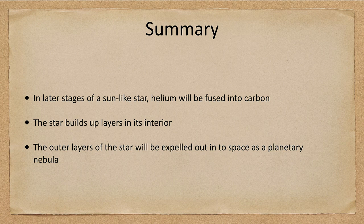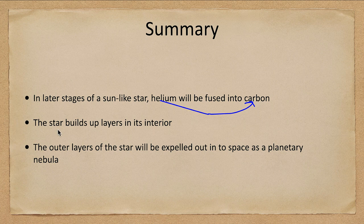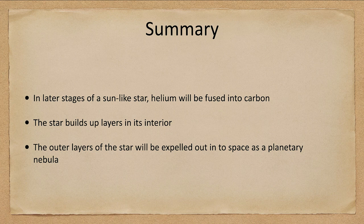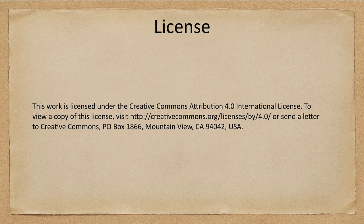To summarize: in the later stages of a sun-like star, helium is fused into carbon while on the main sequence hydrogen was fused into helium. The star builds up different layers of material in its interior. Eventually the outer layers are expelled into space, giving us a planetary nebula and leaving behind a white dwarf at the center. That concludes this lecture on the later stages of stellar evolution — until next time, have a great day.